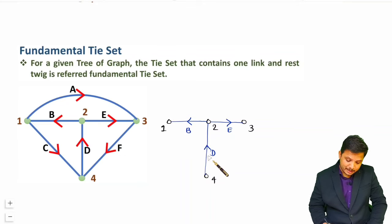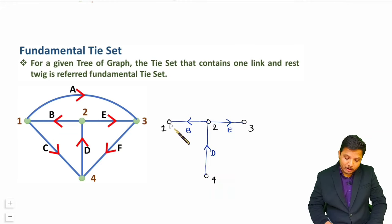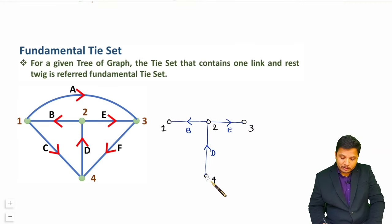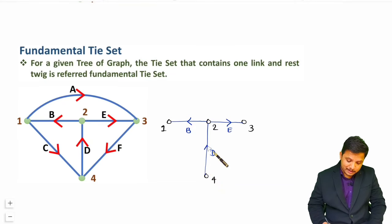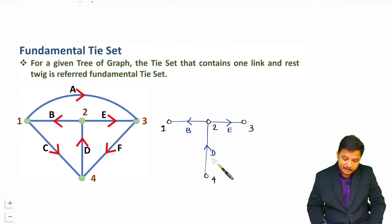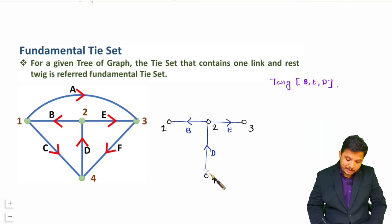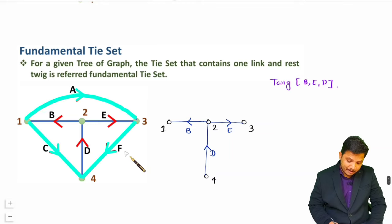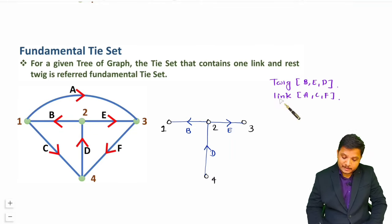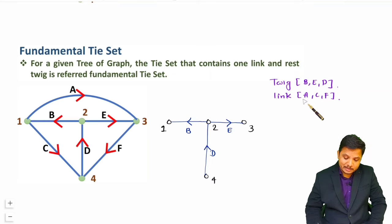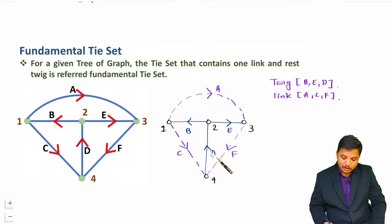This tree contains three branches and it covers all the nodes as well as it does not form any closed loop, so this is one valid tree. This tree contains branches B, E, and D — so these branches B, E, and D are called twigs. As per standard process, when you draw a graph, twigs should be drawn by solid line and links should be drawn by dashed line.